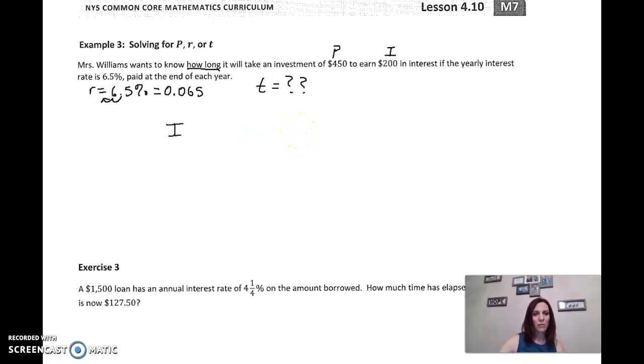She wants to know how long it's going to take. So use the same formula. We know how to solve for an unknown, an unknown variable, right? Plug in what you know. Principal is $450. So I'm going to replace P with 450. Interest is $200. So I'm going to replace I with 200. And our rate is 0.065. But we don't know our time, T.